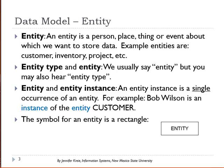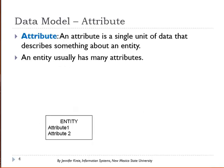The symbol for an entity is a rectangle. We also have the attribute concept — an attribute is a single unit of data that describes something about an entity. So what describes a customer? First name, last name, customer number, customer phone number.